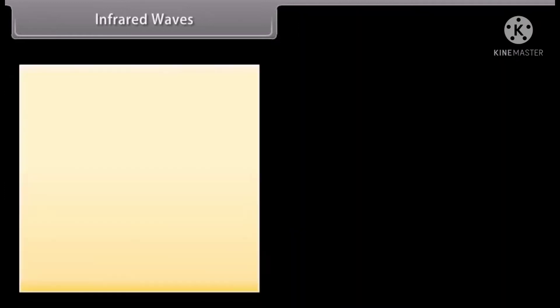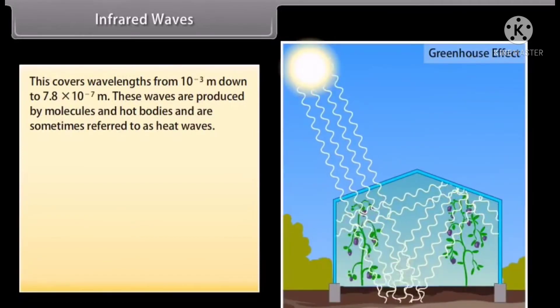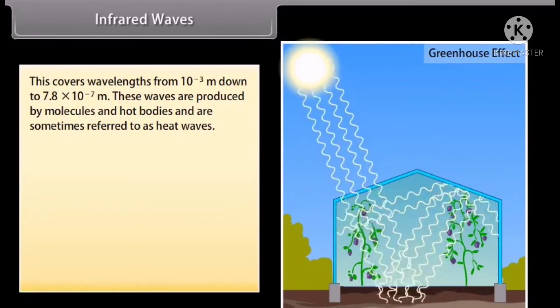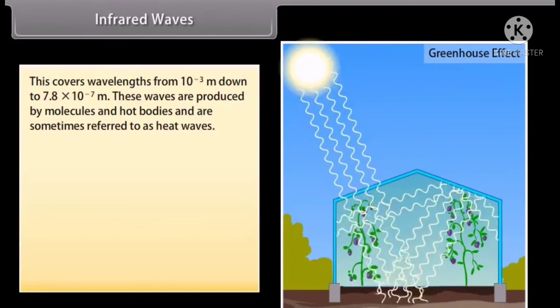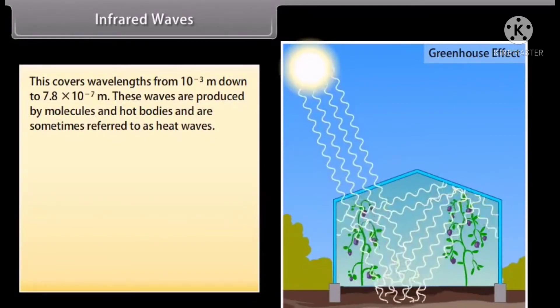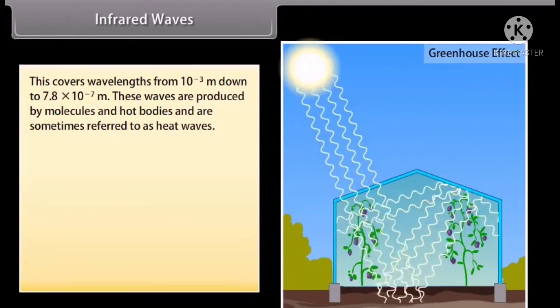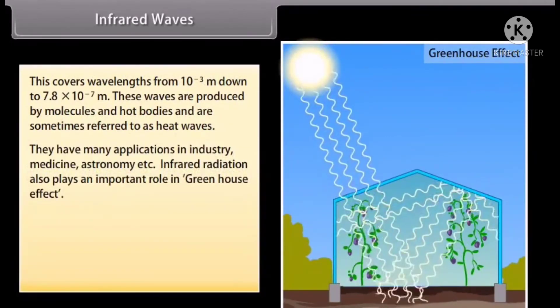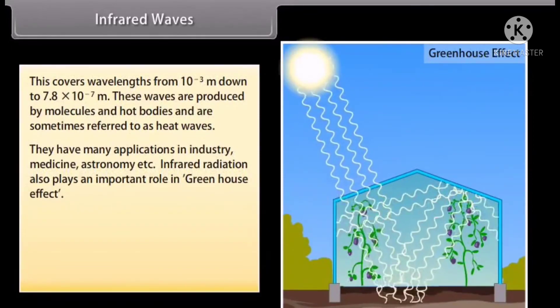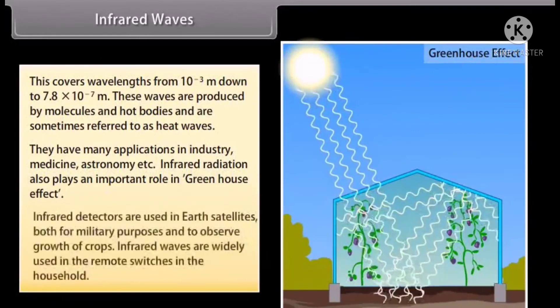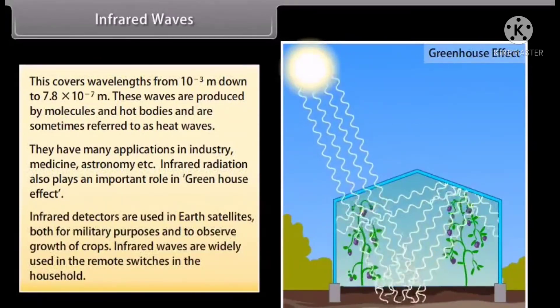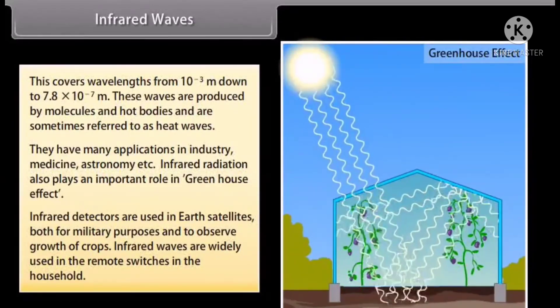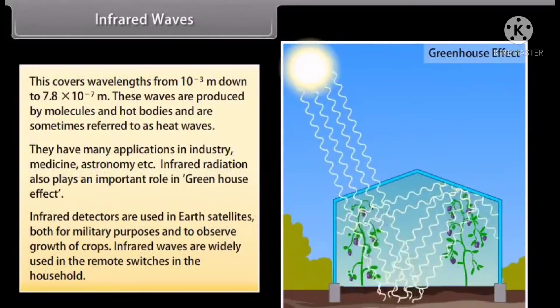Infrared waves: This covers wavelengths from 10 raised to the power minus 3 meter down to 7.8 into 10 raised to the power minus 7 meter. These waves are produced by molecules and hot bodies and are sometimes referred to as heat waves. They have many applications in industry, medicine, astronomy, etc. Infrared radiation also plays an important role in greenhouse effect. Infrared detectors are used in Earth satellites both for military purposes and to observe growth of crops. Infrared waves are widely used in the remote switches in the household.